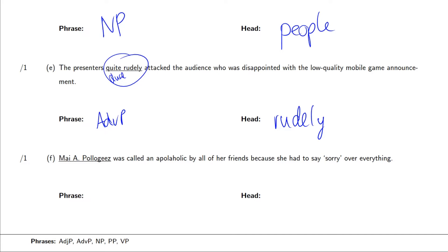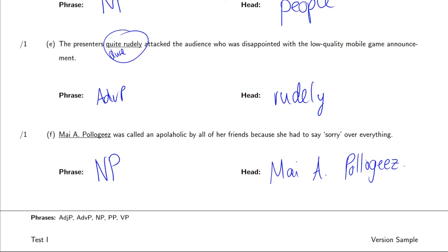And finally, the last one, my apologies was called an apolaholic. I'm sorry for the awful pun. My apologies is a proper name, which is a noun phrase. And of course, proper names can be more than one word. And if you have a proper name that's ahead of a noun phrase, that head can also be more than one word. So here, the entire head would be my apologies. Don't worry, it's the worst pun in this exam, but it's certainly not the worst pun in the course. That's question two. And like you saw before, the phrases are also listened at the bottom.